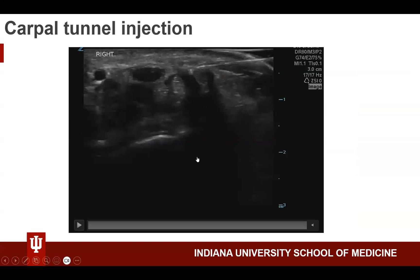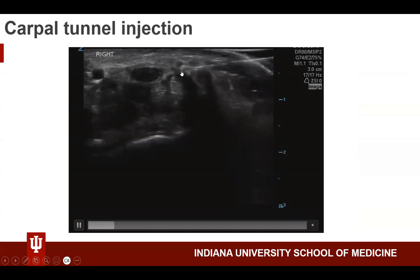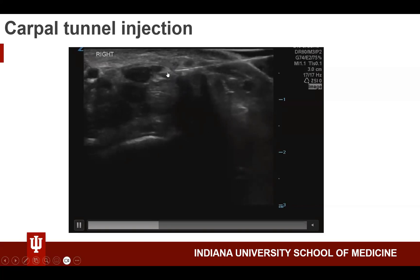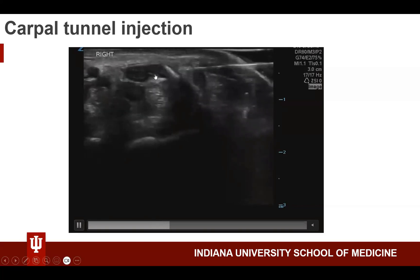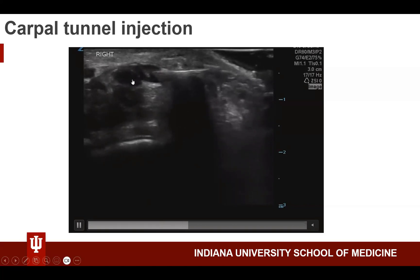Ultrasound can also be used to guide carpal tunnel injections. Here we see a needle coming in through the radial approach. When performing the injection, we want to get under the flexor retinaculum and inject between it and the median nerve, and also under the median nerve, trying to surround the median nerve with the injected fluid. We can see the needle getting below the flexor retinaculum and the fluid being injected between the retinaculum and the median nerve.